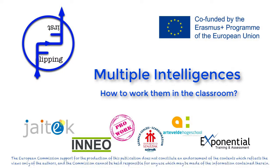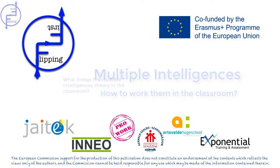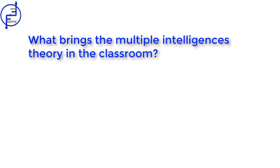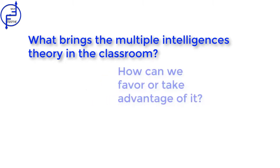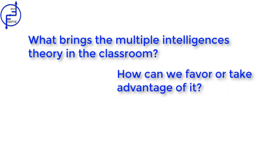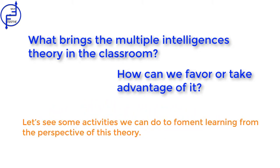Multiple intelligence theory was devised by Howard Gardner and consists of eight intelligences that interact with each other in all humans, resulting in a unique combination that we don't even see in twins. One of the great contributions of multiple intelligences is that everybody is intelligent in one way or another.